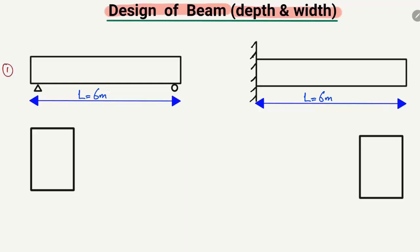Here we have two beams — one is a simply supported beam and another is a cantilever beam. The simply supported beam has a hinge support and a roller support, while the cantilever beam has a fixed support at one end and the other end is free. The length of both beams is 6 meters. We have to find the depth and width for these two types of beam using the ACI code.